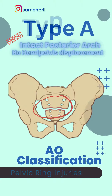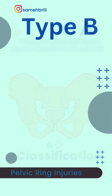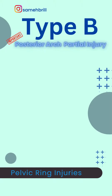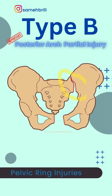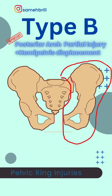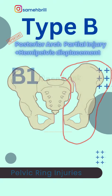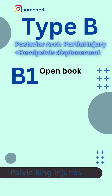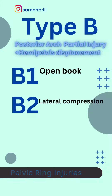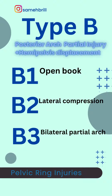Type B is vertically stable but rotationally unstable; therefore they have partial posterior arch disruption and hemipelvis displacement. That includes B1, open book pelvis; B2, lateral compression; and B3, which is bilateral partial posterior arch disruption.